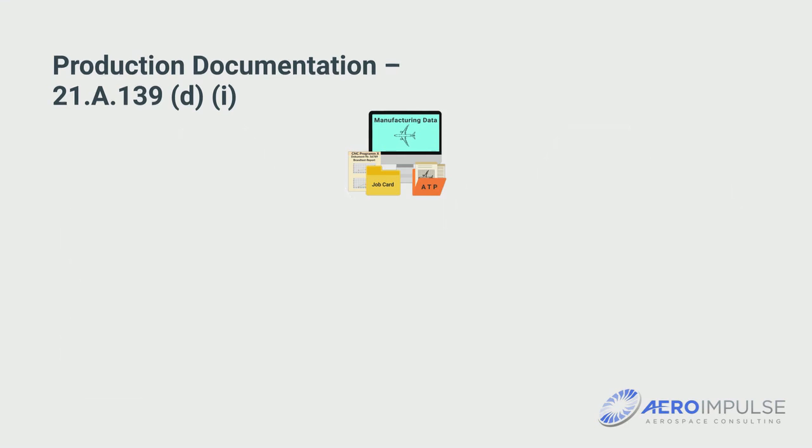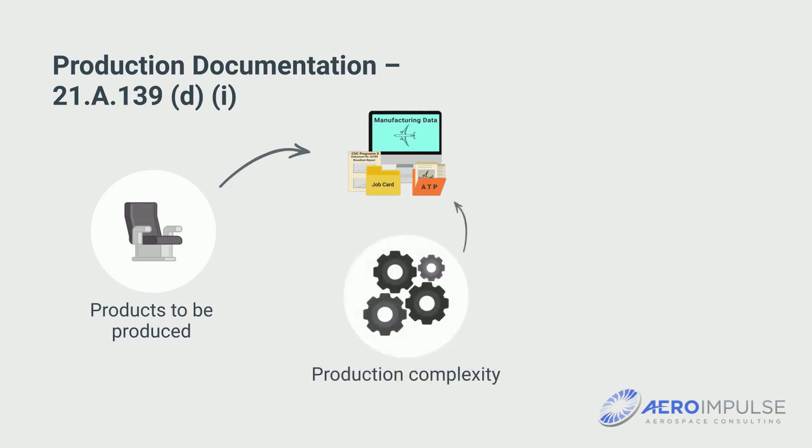The type and scope of the manufacturing data result from the products to be produced, the production complexity, and the qualification of the employees.